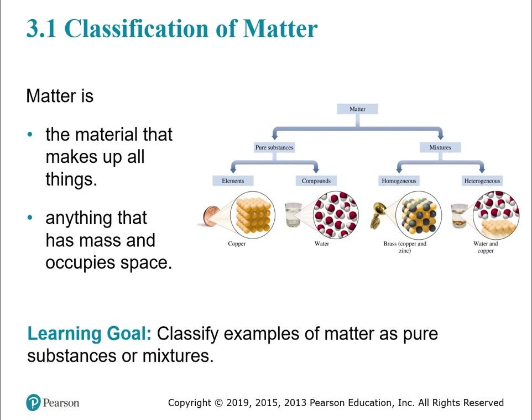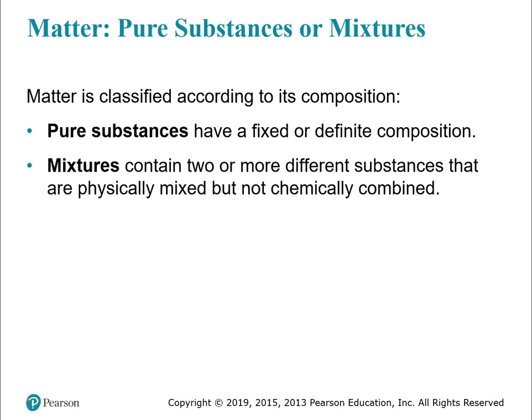The first thing we're going to do is classify matter. We talked about matter in Chapter 1 — anything that has mass and occupies space. Now we're going to get more technical. Matter is classified according to its composition. We have two big classes: pure substances, which have a fixed or definite composition, and mixtures. Mixtures have two or more different substances that are physically mixed but not chemically combined, so you can use physical means to separate them.